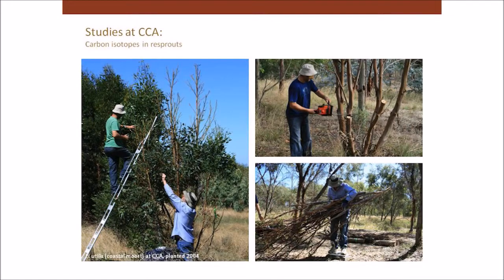Another study I was involved with at Currency Creek Arboretum was looking at carbon isotopes and re-sprouts. We cut down a heap of trees, and for the obligate seeder species that don't have a mallee root and wouldn't have re-shot, we had to defoliate them — pull every leaf off the tree. Each time the tree shot back, we cut off those shoots and sent them to Germany, where they were analysed to see if the carbon the re-shoots were using to grow was assimilated last year, the year before, or however many years before that. It involves the sacrifice of trees sometimes, but you get all sorts of interesting information out of it.